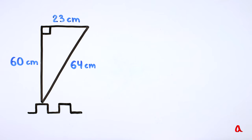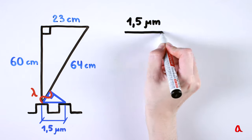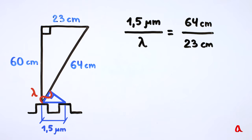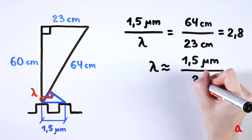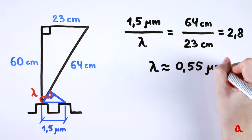Let's draw the second right triangle, where the hypotenuse is the grid spacing and one of the legs is the wavelength. This triangle is similar to the first one, so we can make a proportion. The grid spacing of 1.5 microns relates to the unknown wavelength as the hypotenuse of 64 cm relates to the 23 cm leg. This means that the wavelength is about 2.8 times less than the grid spacing and it equals 0.55 microns.